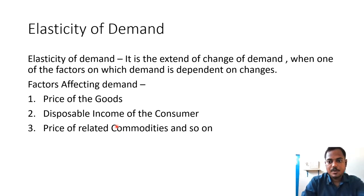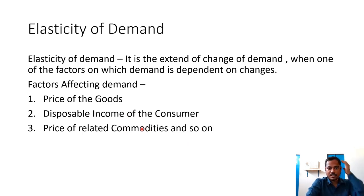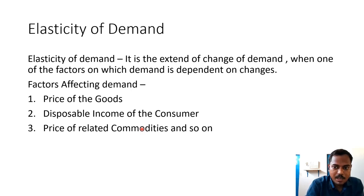For example, let us take two SIM cards — Jio and Airtel. When Airtel's price is changing, the demand of Jio also changes. That is the factor 'price of related commodities,' which affects the demand for a commodity. When the price of one commodity changes, its related commodity's demand also changes.